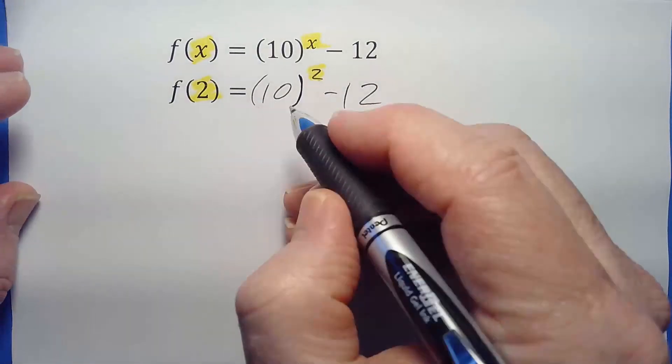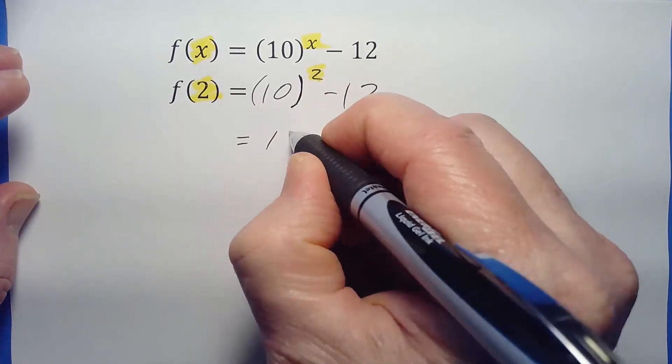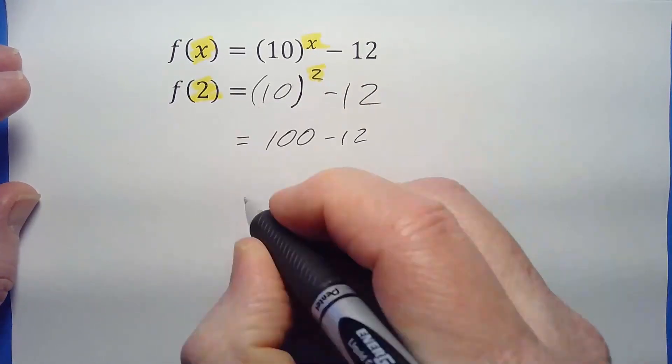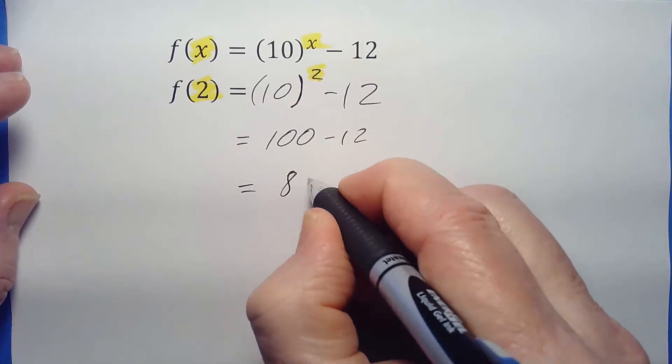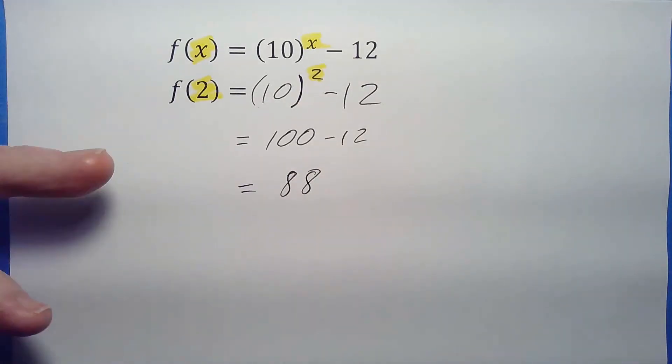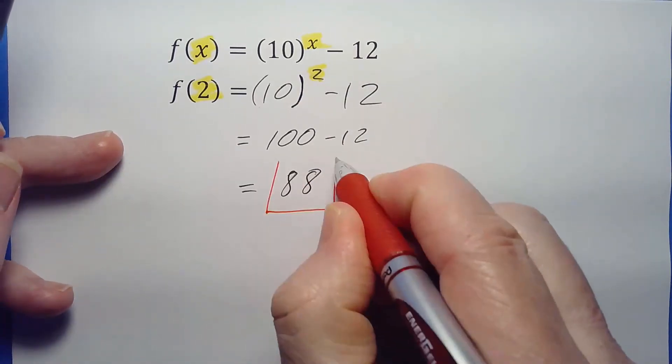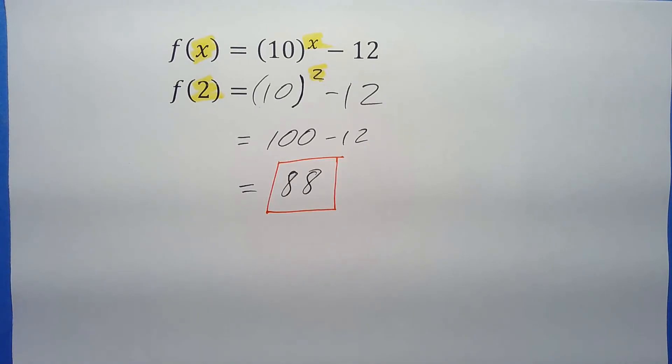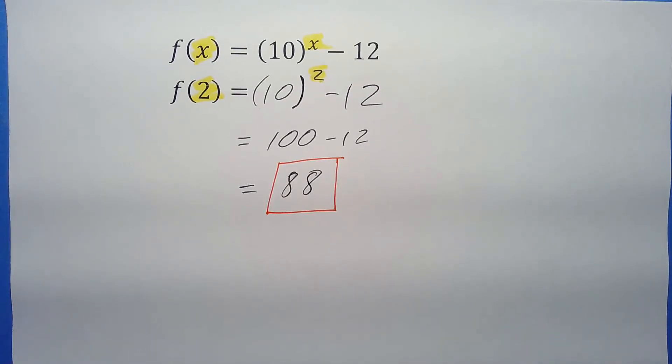10 squared—well, that's just 100. 100 minus 12, that's just 88. This is so cool. We're almost to the last one. Here it comes—last one.